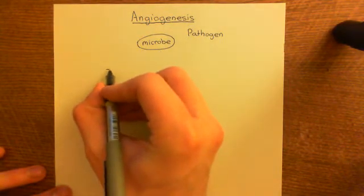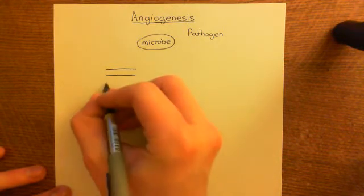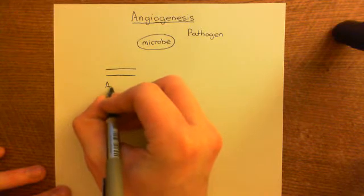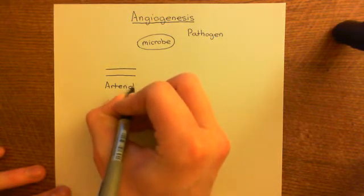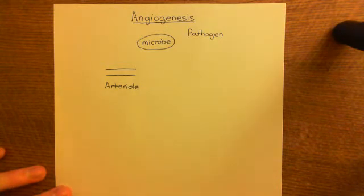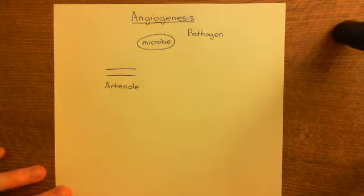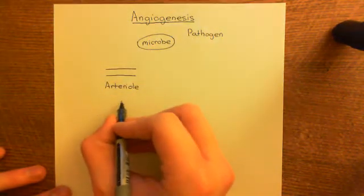The first type is arterioles. Arterioles are tiny little blood vessels — you should not confuse them with arteries. Arteries are the massive structures that you learn about in anatomy. Arterioles are absolutely tiny, really microscopic structures. I'll discuss their structure now.